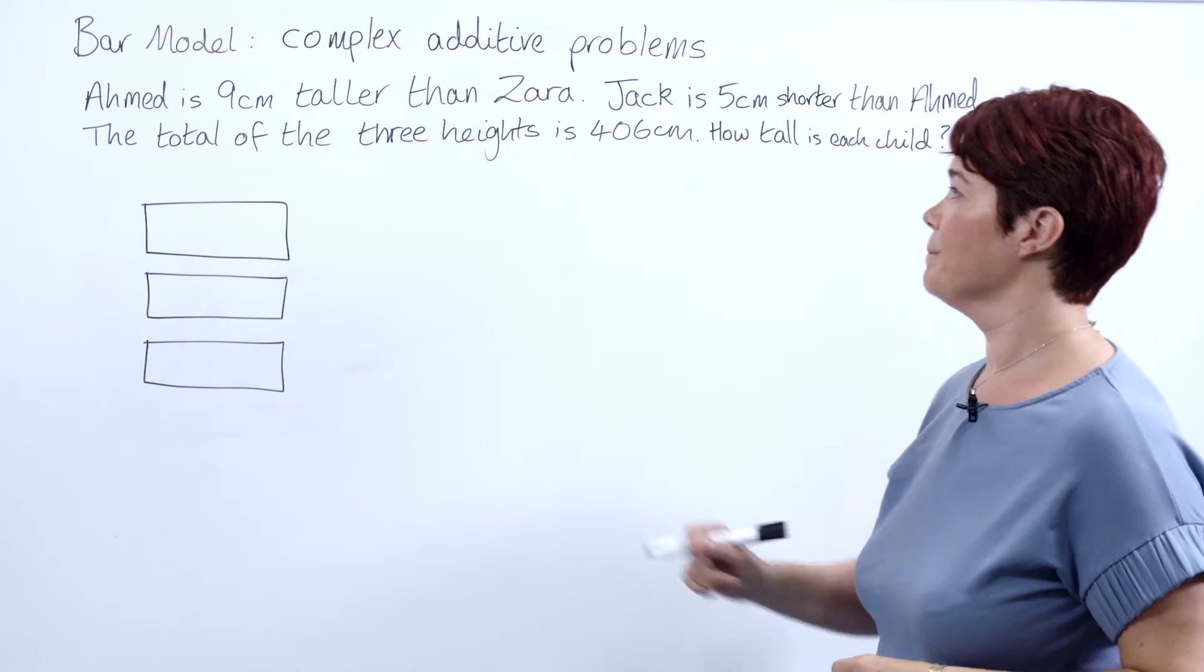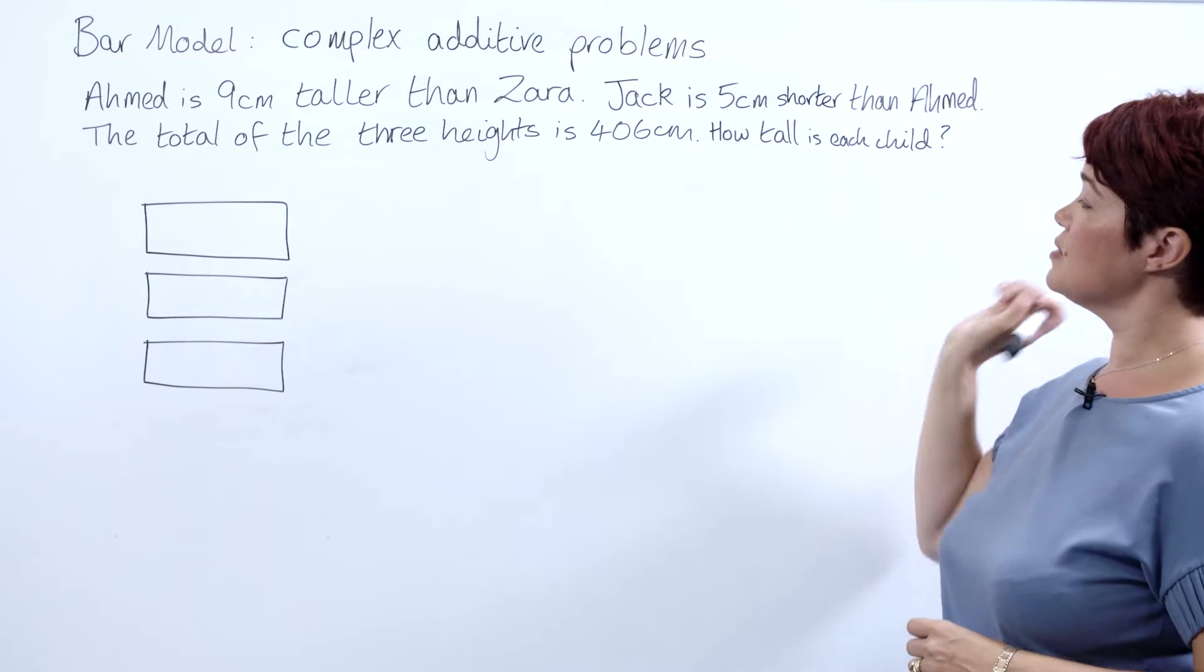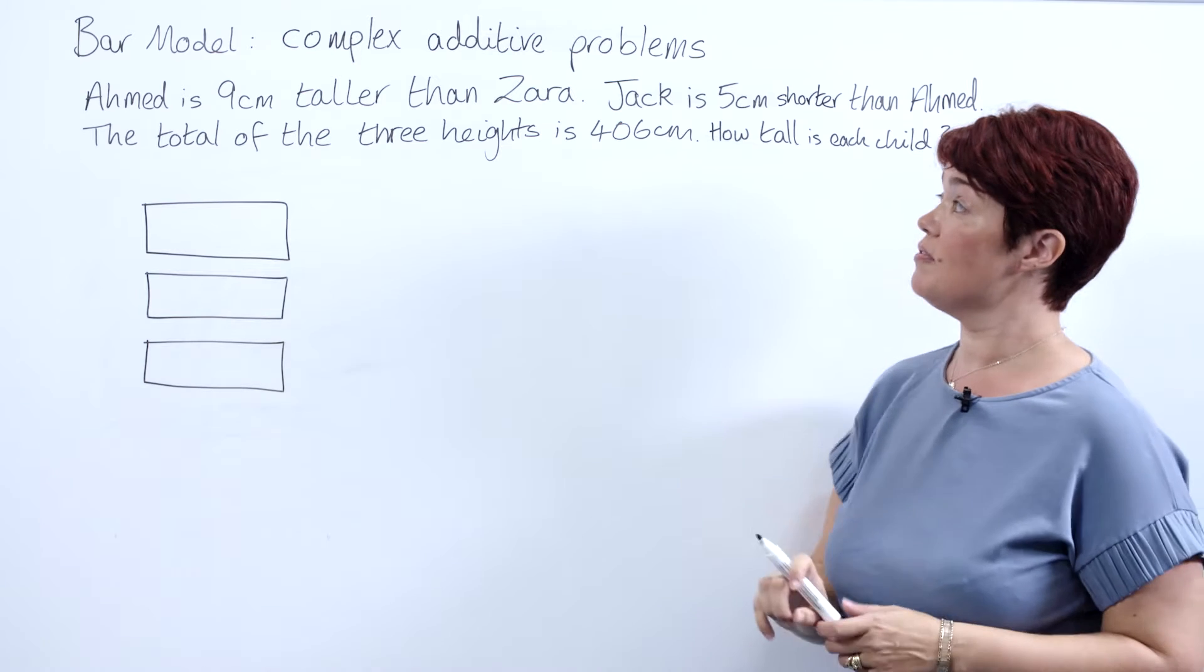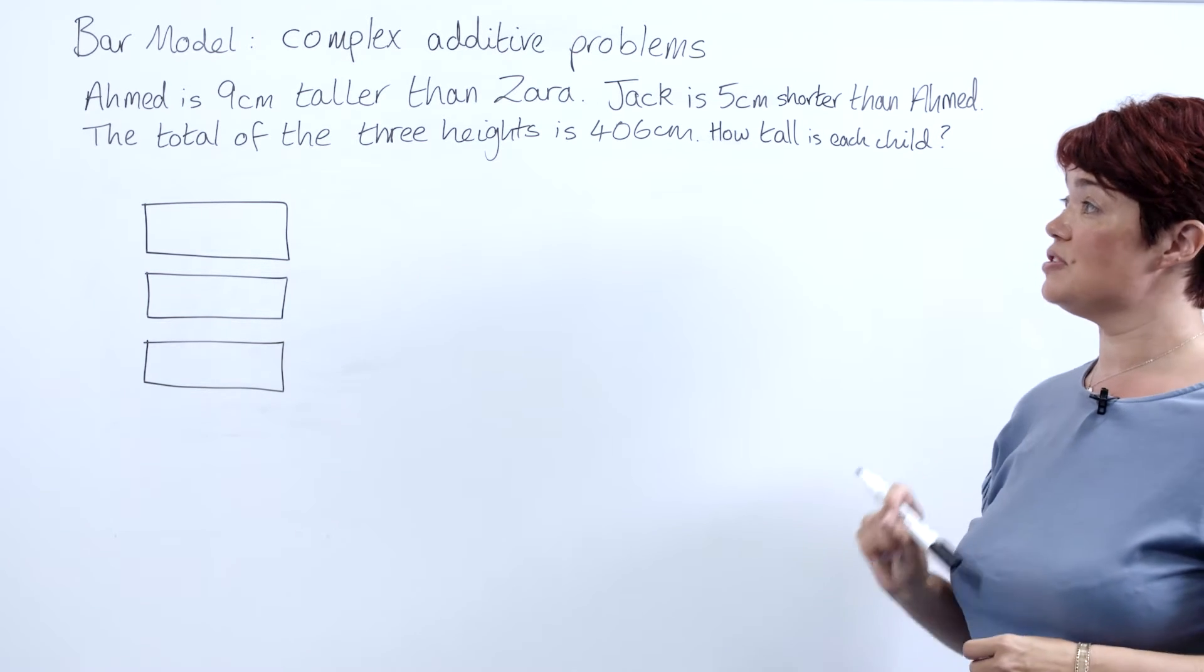This is our problem: Ahmed is 9 centimeters taller than Zara. Jack is 5 centimeters shorter than Ahmed. The total of the three heights is 406 centimeters. How tall is each child?